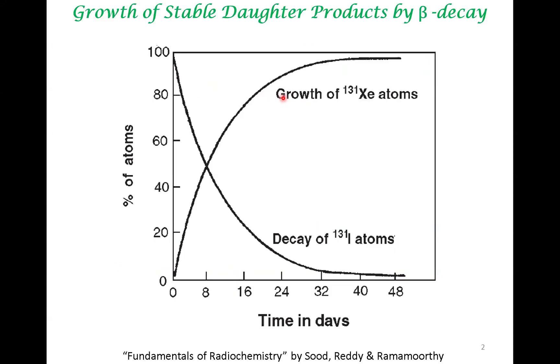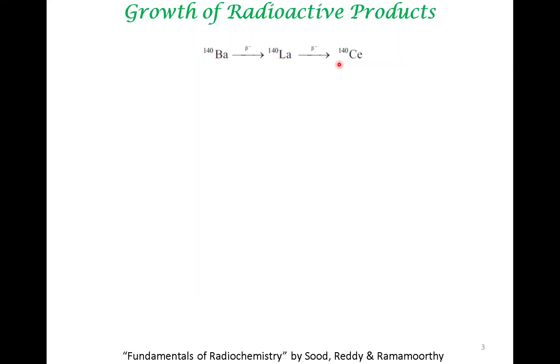So here, what we are looking at, there is a radioactive decay of iodine via beta decay to a stable product. So in this case, as this element decays, there is an accumulation of a stable daughter product. In this case, this daughter product is stable. Therefore, it does not decay into any other element. But this is often not the case. For example, in this case,